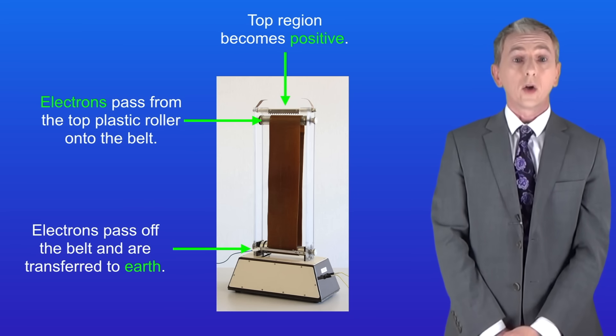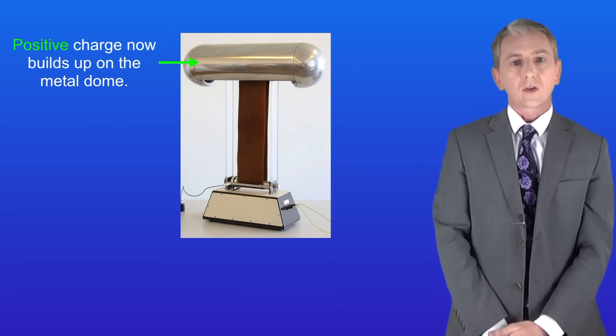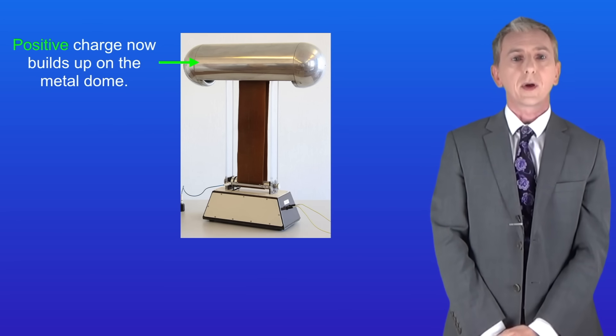Now remember that the generator normally has a metal dome like this. The dome acts as a store of positive charge by allowing it to spread out.